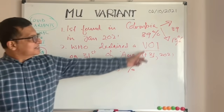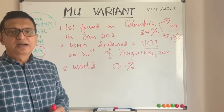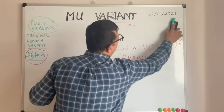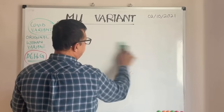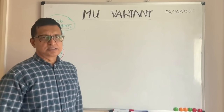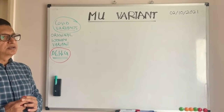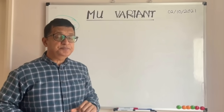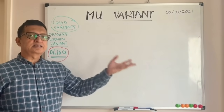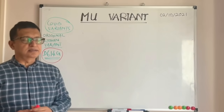Looking at all these things, we can say that the mu variant could not dominate the world as fast as the Delta variant did. However, there is one thing we still don't know: given the many changes in the spike protein — which is the basis for all current vaccines — we don't know how far mu can escape acquired immunity from previous COVID infections, or how far it can escape vaccine-induced immunity.